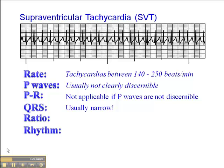The QRS is usually narrow — and I put an exclamation mark there — because if you see a tachycardia without clearly discernible P-waves and the QRS is wide, we have to assume that's a ventricular tachycardia. A wide-complex tachycardia without clearly discernible P-waves is ventricular tachycardia until proven otherwise. That's why it's very important that we only make the interpretation of SVT when the QRS is narrow.